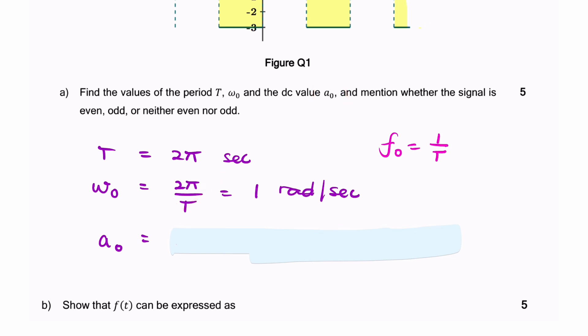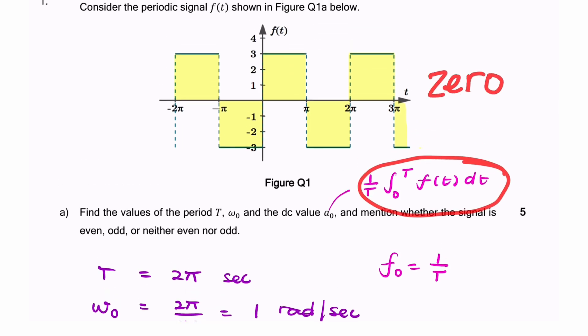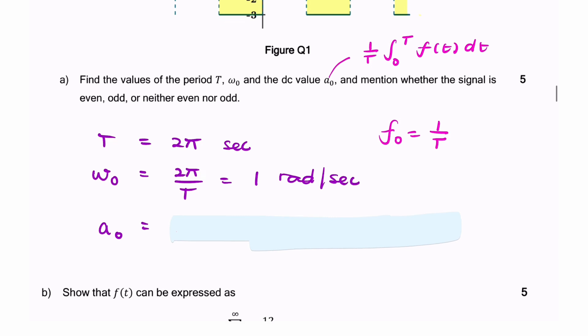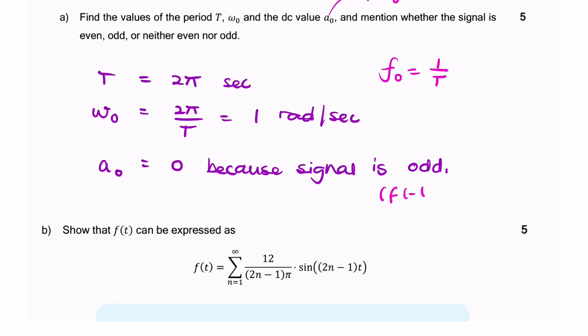It also asks for the DC value. The DC value is equal to one over T, the integral from zero to T of f(t) dt. But that is simply zero if we have an odd signal. And here we clearly have an odd signal. There's symmetry around the origin, and f(negative t) equals negative f(t).